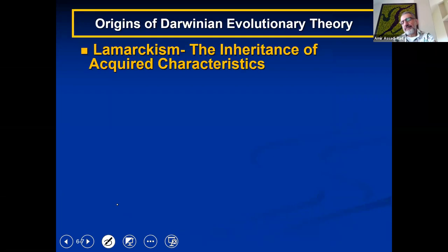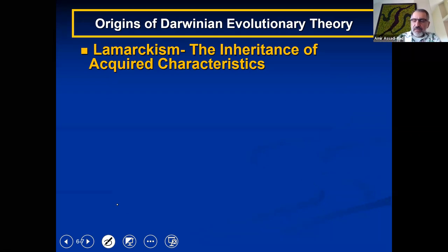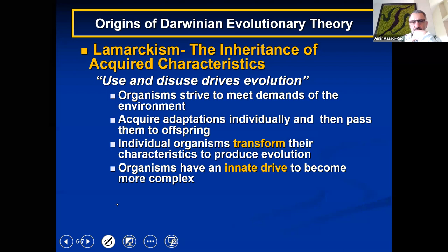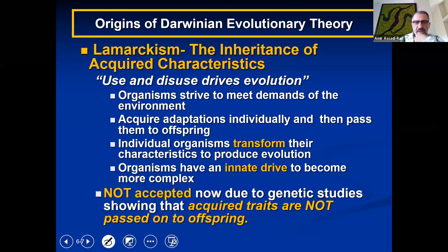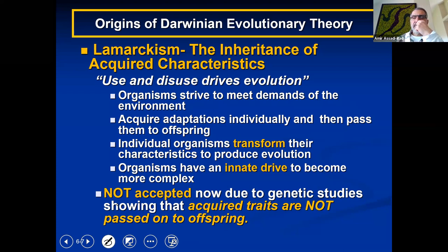In the origin of Darwin's theory of evolution, we should also visit Lamarck. Lamarck proposed inheritance of acquired characteristics — use and disuse drives evolution. Organisms strive to meet demands of the environment, acquire adaptations individually, and pass them to offspring. Organisms transform their characteristics to produce evolution and have an innate drive to become more complex. This is not accepted nowadays based on genetics. Of course, Lamarck did not know genetics, and Darwin did not know the laws of genetics either.